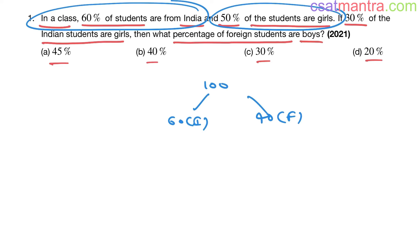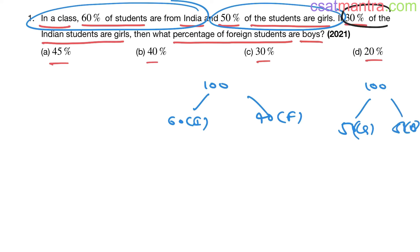Now, 50% of the students are girls, which means 50 students are girls and 50 students are boys. Let's keep that noted.